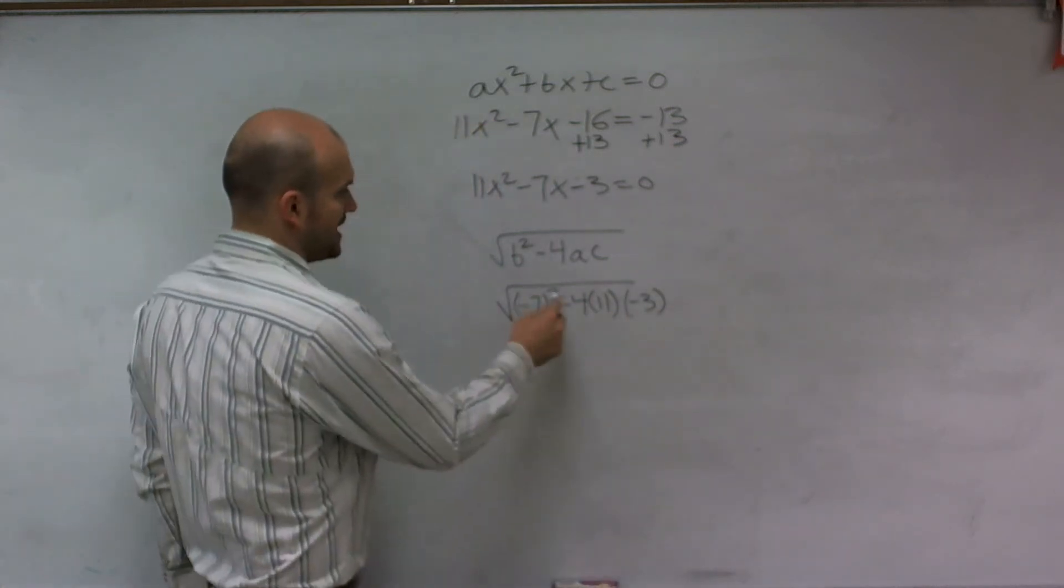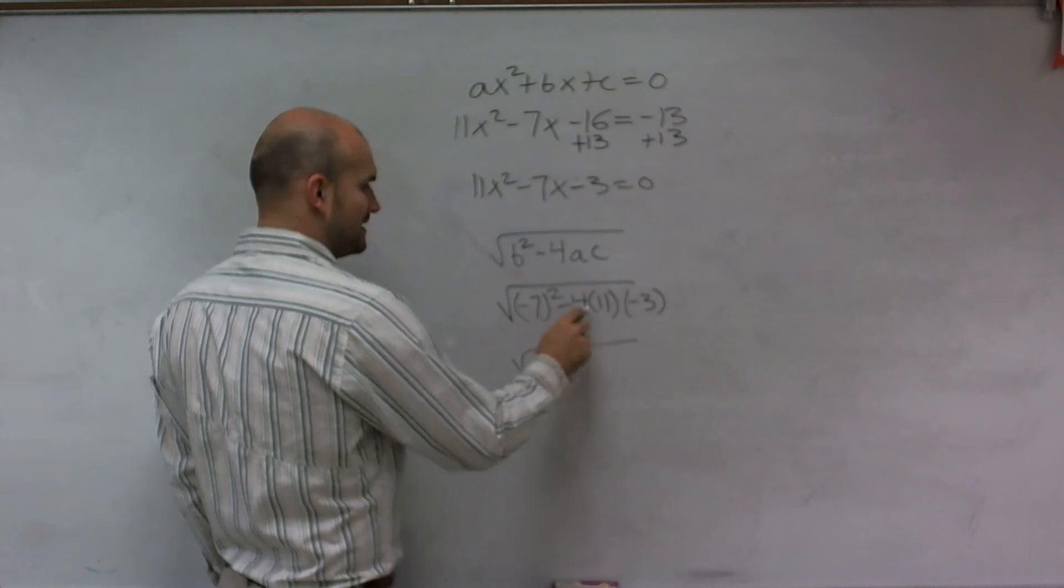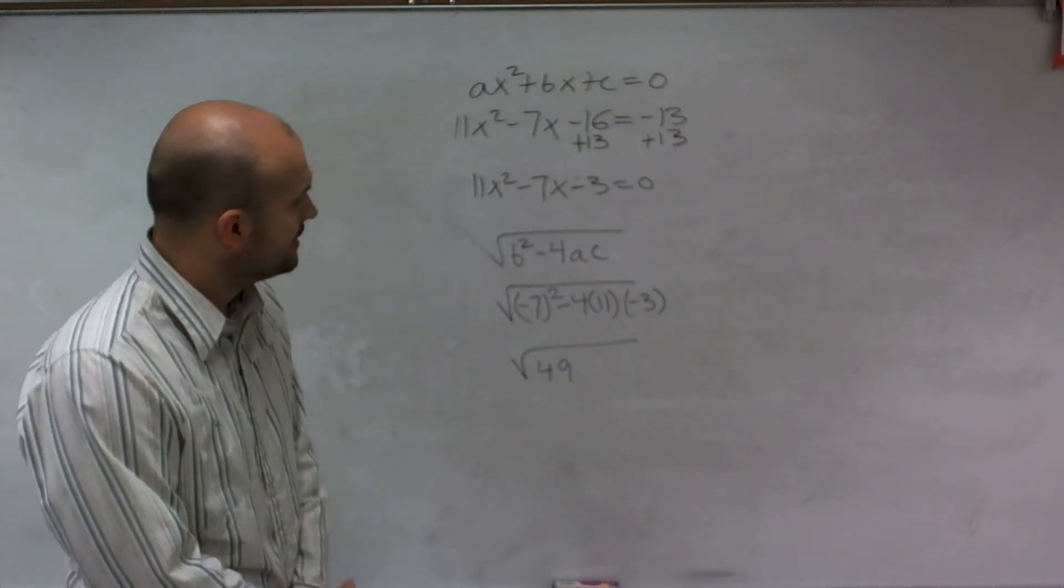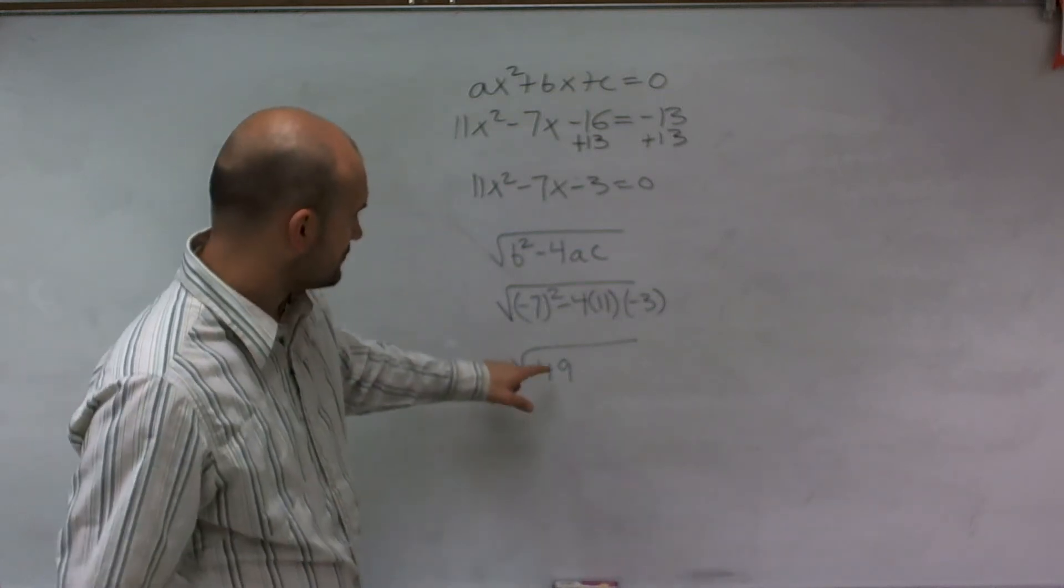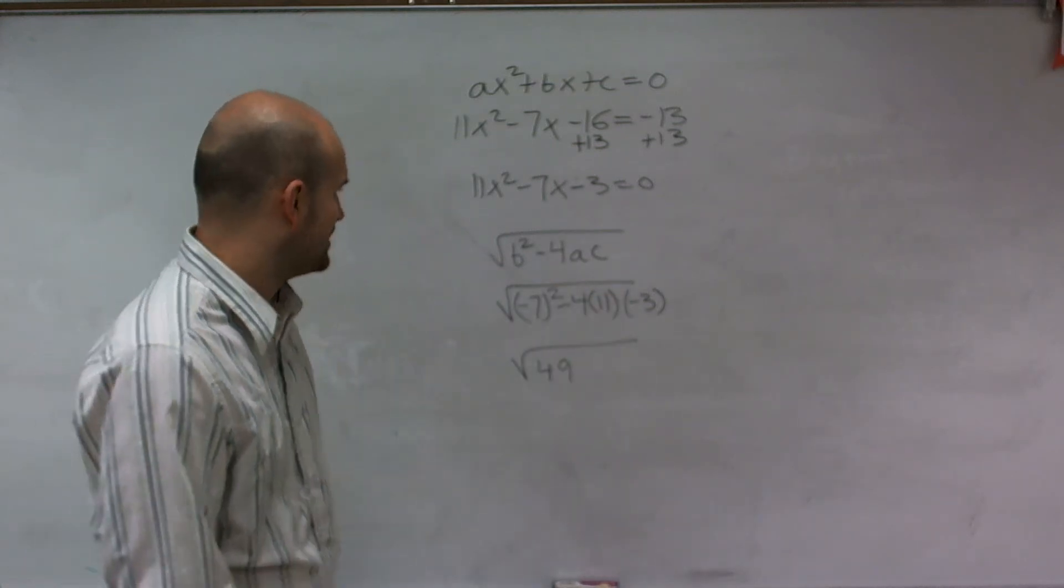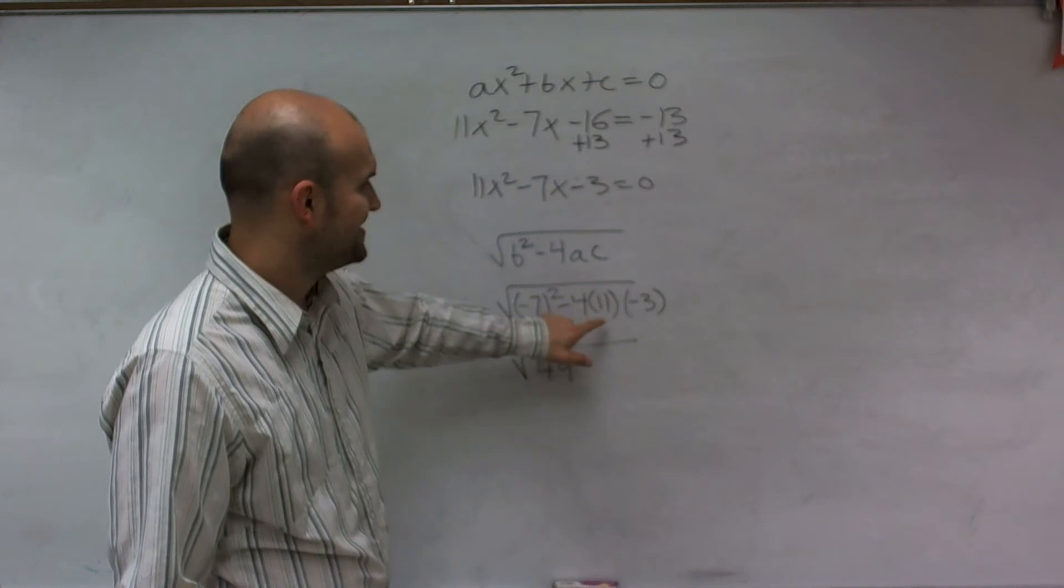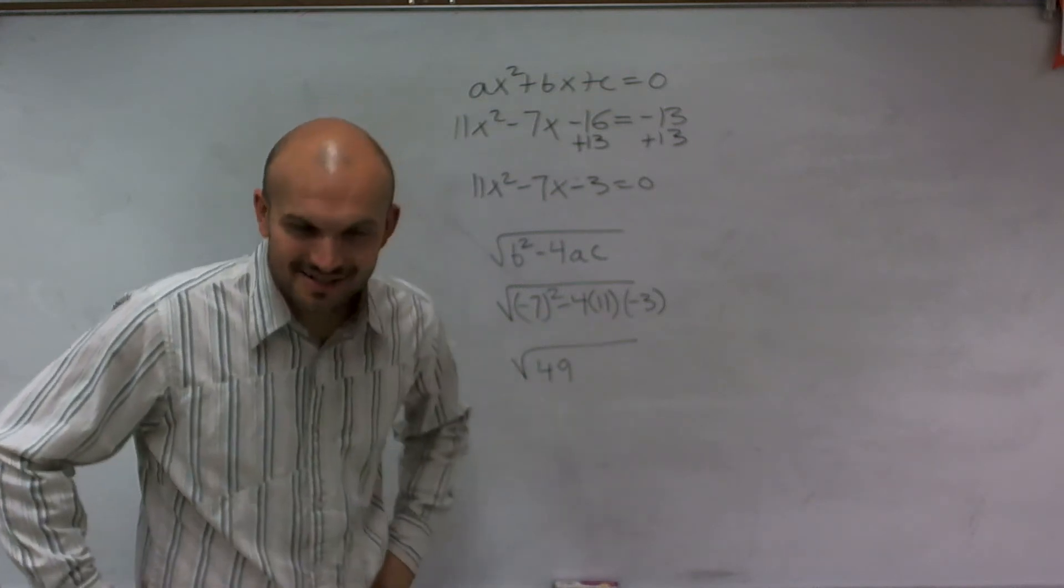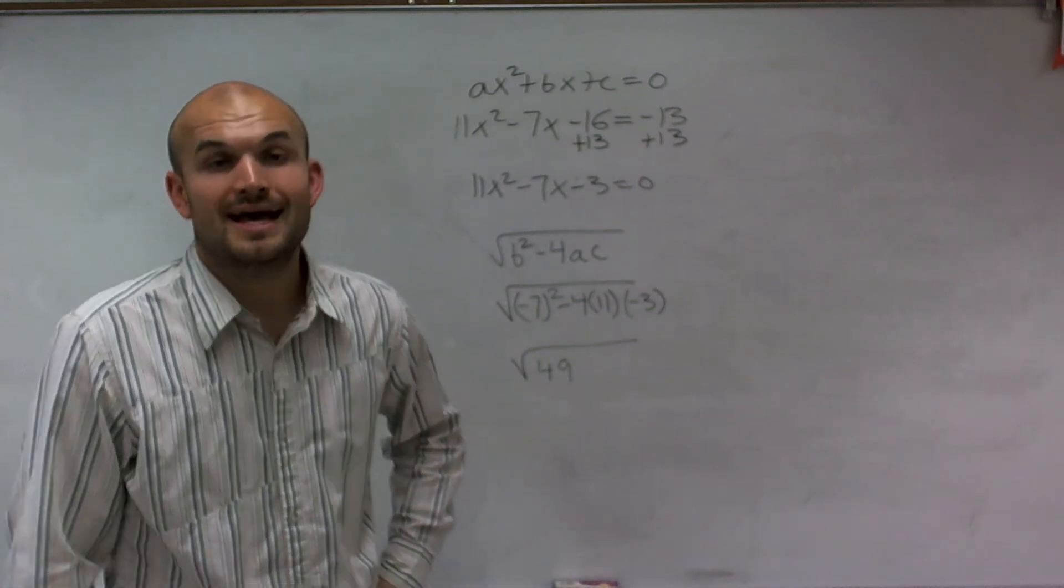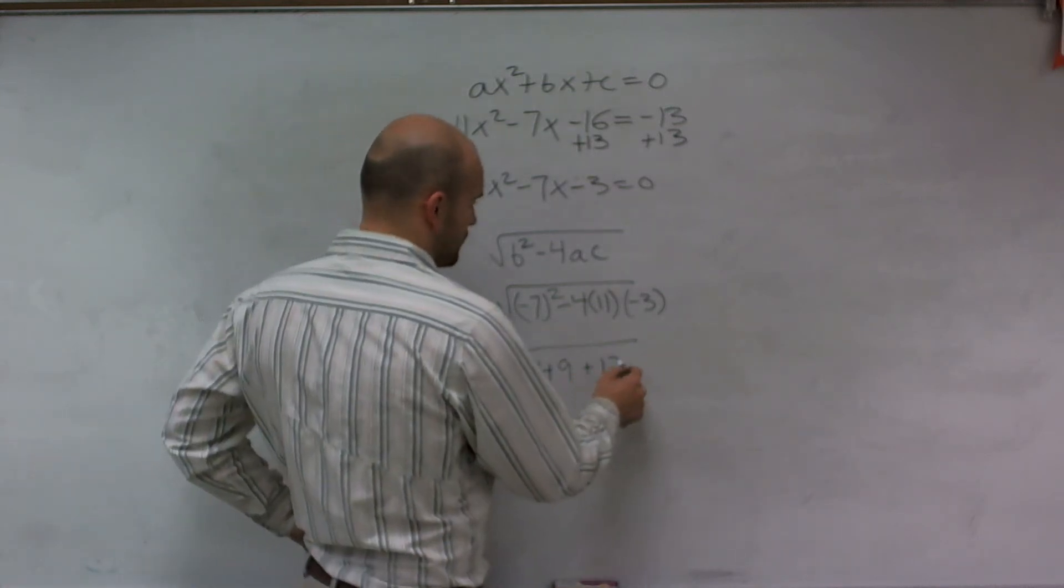Okay, so now the square root of negative 7 squared is 49. And let's see, I'm going to be actually adding it because negative 4 times negative 3 is going to be positive. 4 times 3 is 12, and then times 11. Well, 11 times 11 is 121, and so 12 11s would be 132. So it's going to be plus 132.